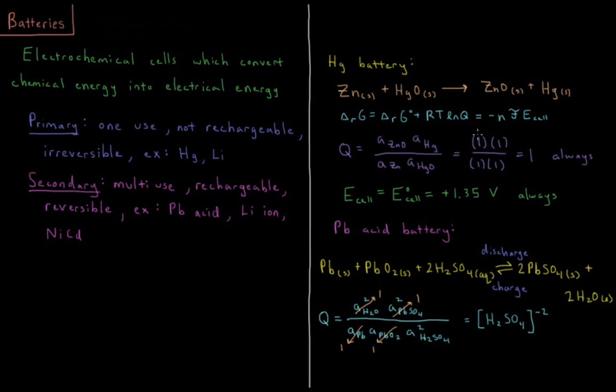The reaction quotient here is 1 times 1 over 1 times 1, which means the reaction quotient is always going to equal 1, meaning that these reactants are always in their standard state, meaning the Gibbs energy of reaction is always the standard Gibbs energy of reaction, and the EMF of the cell is always the standard EMF of the cell. This particular battery happens to have a standard EMF of 1.35 volts, so if you want a very steady EMF, this battery will always produce a potential of 1.35 volts.